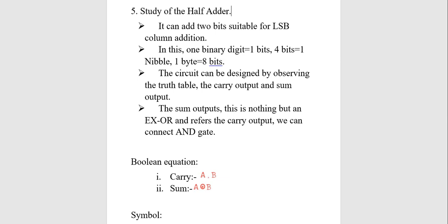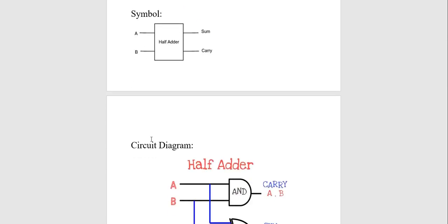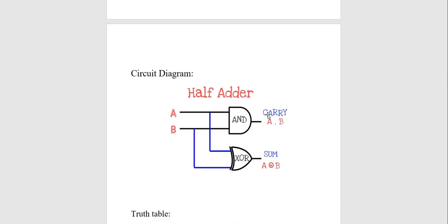The half adder circuit is designed by using the AND gate and the XOR gate. This design uses two gates, and each gate has a specific role — that is, what is the use of the AND gate and what is the use of the XOR gate.